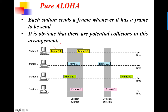However, in the second case, station 1 sends frame 1.2, but soon after, station 4 sends frame 4.1, and then stations 2 and 3 also send — all these frames experience a collision and will get lost and need to be retransmitted. Similarly, frames 2.2 and 4.2 collide because they overlap in time and both must be resent.